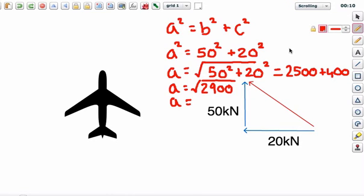Okie dokie, so we're back and I have a calculator, so I'm just going to type in square root of 2,900 and it says it's 53.85, so I'm just going to say 53.4, so 53.4 and it's in kilonewtons.